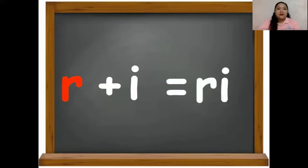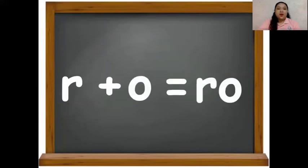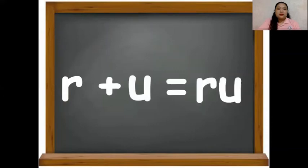R, i, ri. R plus o is ro. R, o, ro. R plus u is ru. R, u, ru.